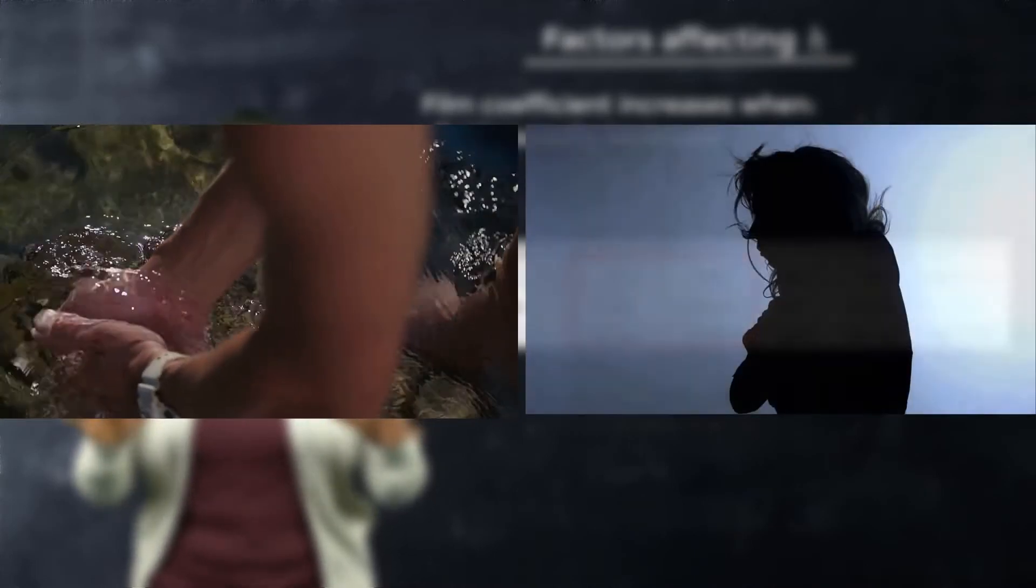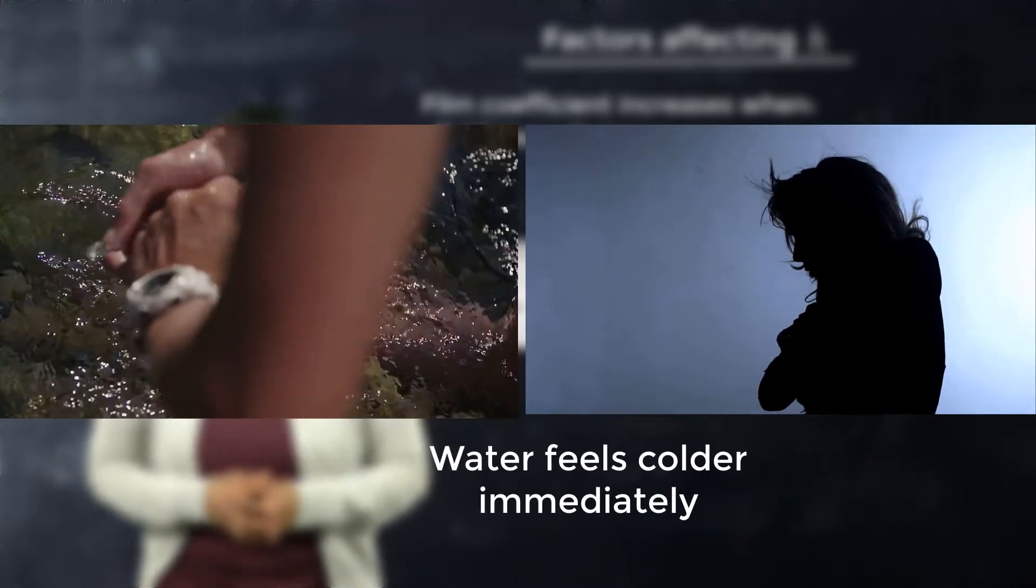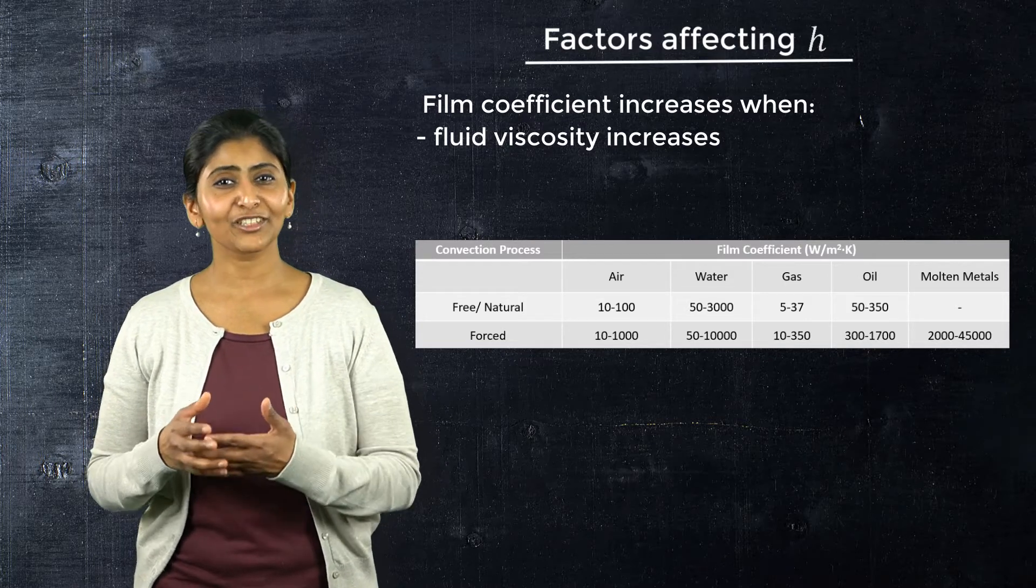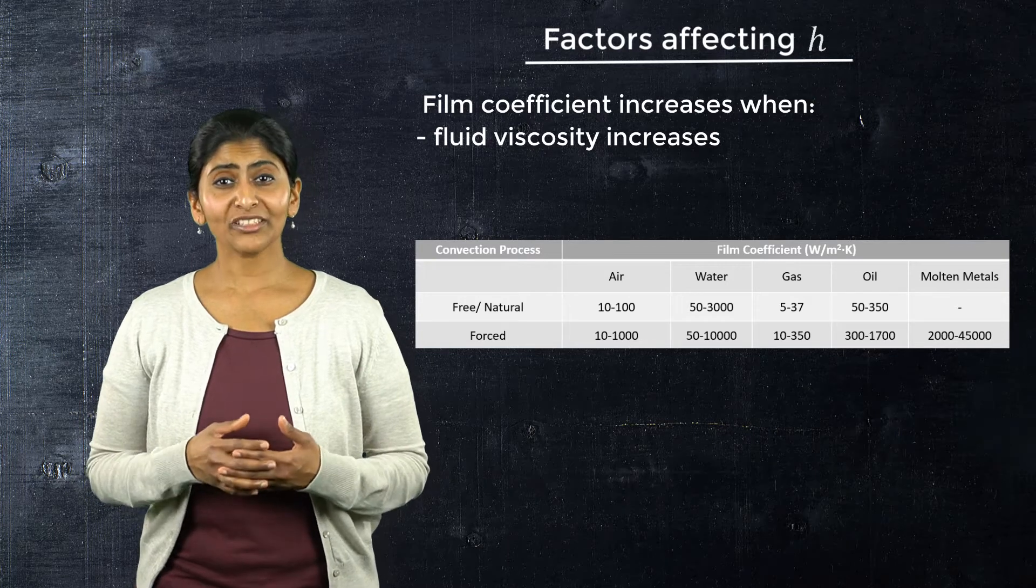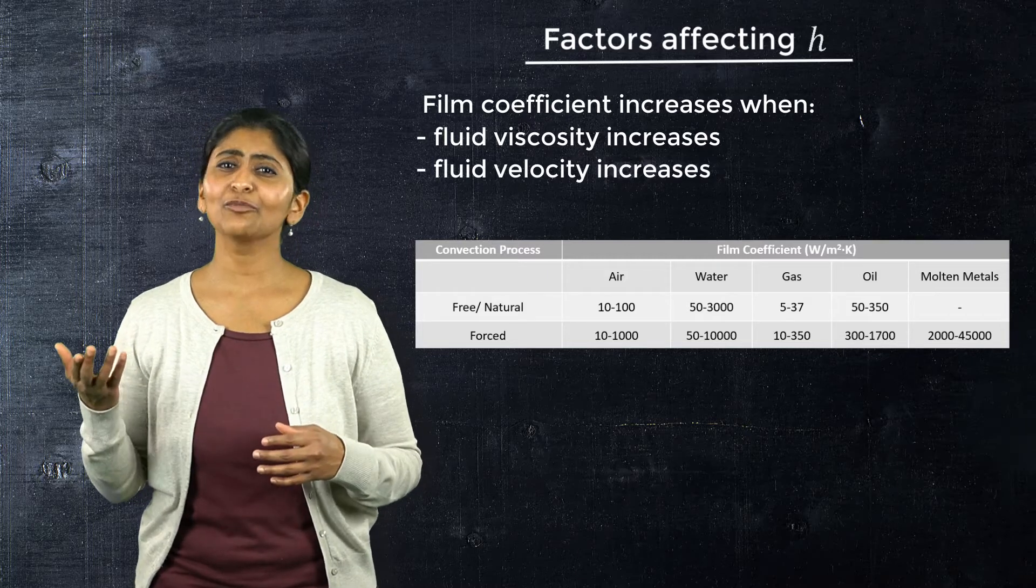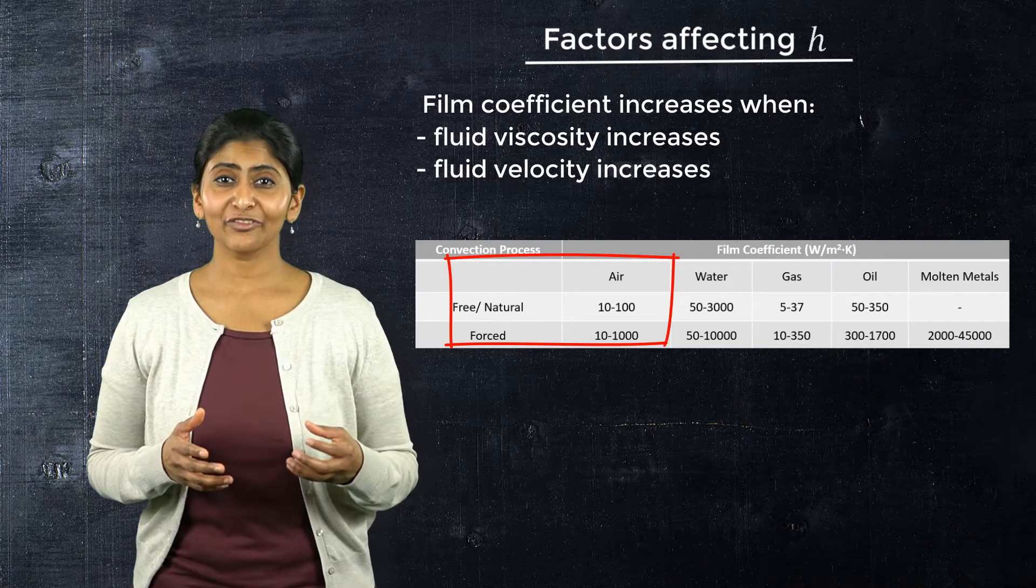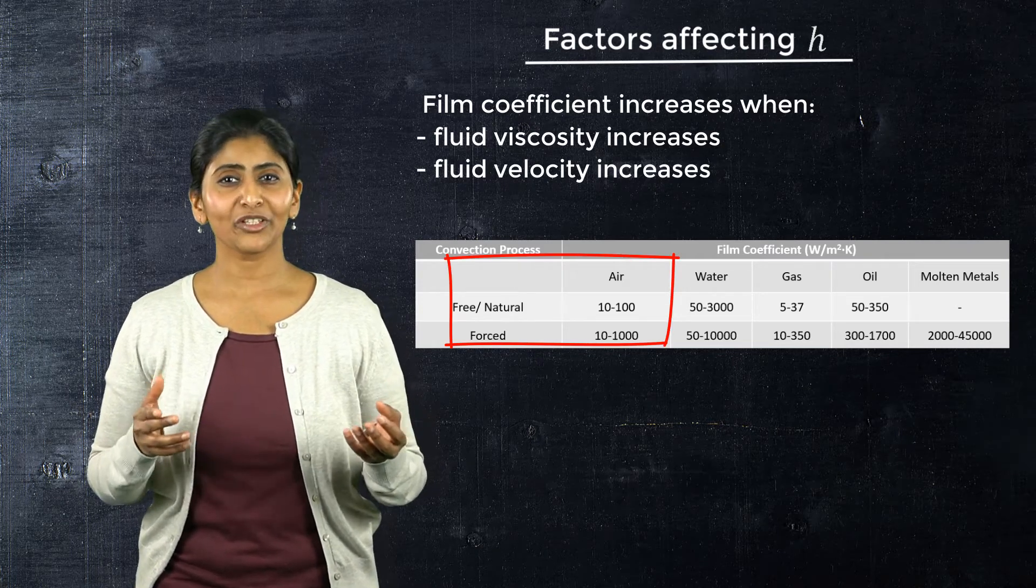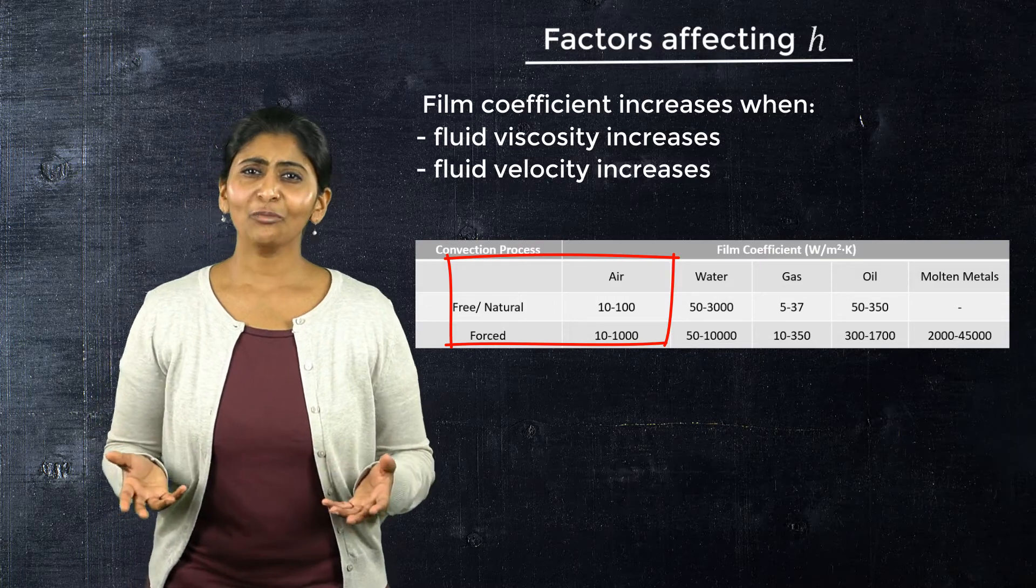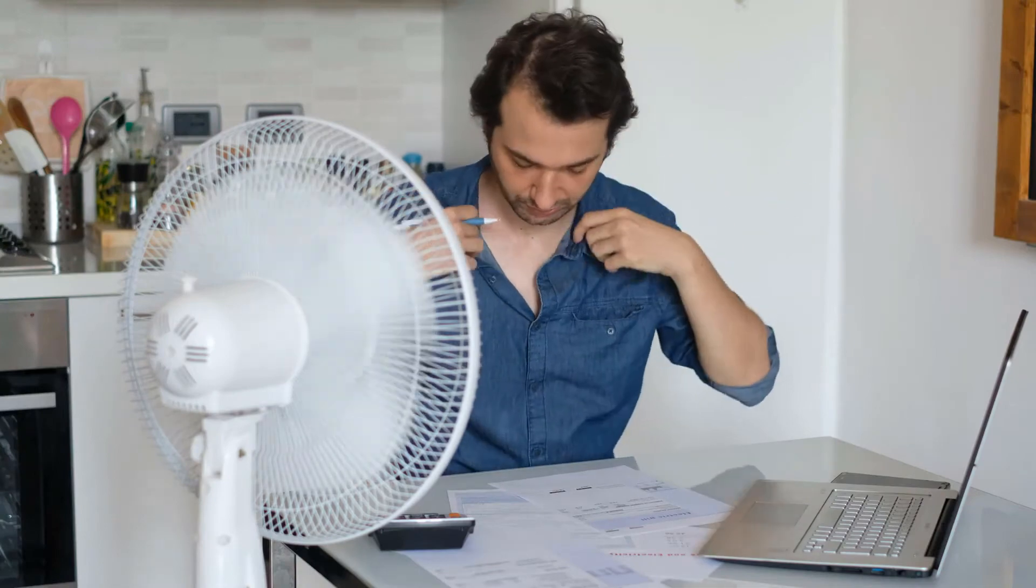A simple example of this is if you touch cold water and cold air which are at the same temperature, the water feels colder immediately. A second observation is that the fluid velocity also impacts the film coefficient. A forced convection has higher fluid velocity and hence will have higher film coefficient value. For example, we can see that forced convection for air has higher film coefficient value as compared to natural convection of air.